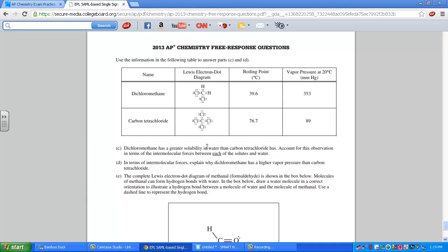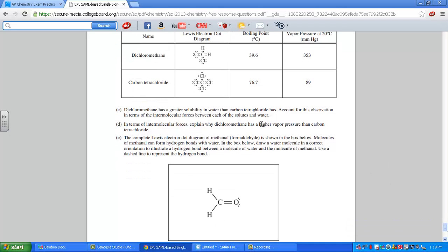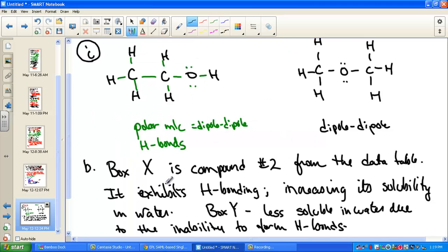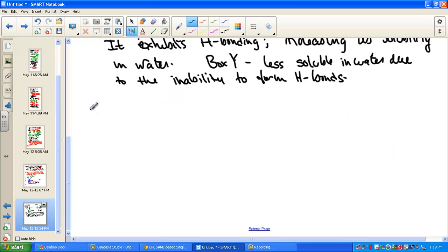Dichloromethane has a solubility in water greater than carbon tetrachloride does. Remember, likes dissolve likes. Water is a polar molecule. Account for this observation in terms of IMFs, intermolecular forces, for each of the solutes in water. Commenting on why dichloromethane would dissolve in water a little bit better than carbon tetrachloride would. We have to comment on both molecules.